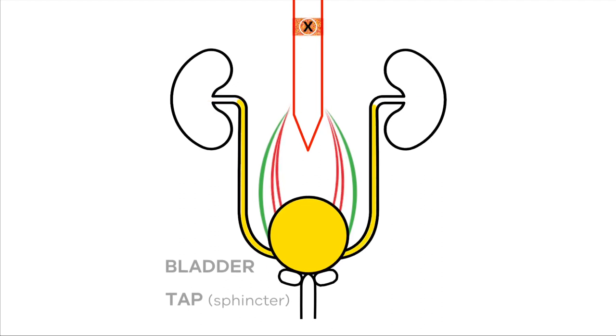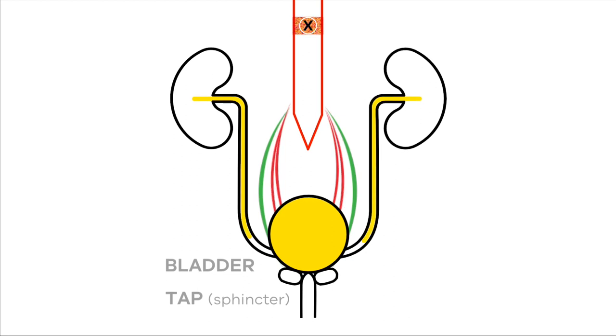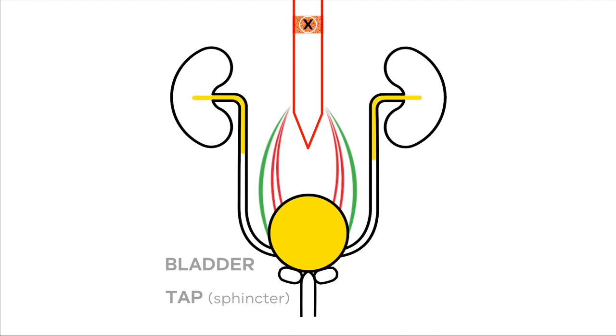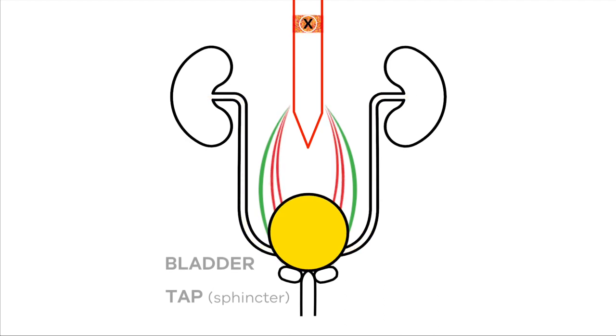The brain can't open the tap using the voluntary nerves. The bladder keeps trying to empty using the automatic nerves. This causes high pressure which can push urine back into the kidneys.